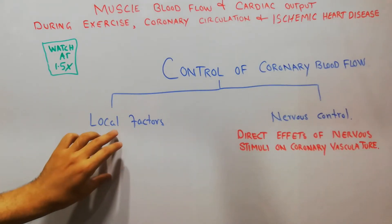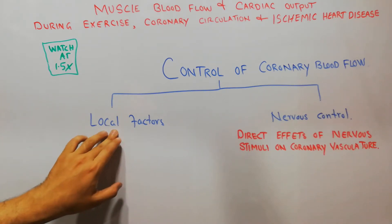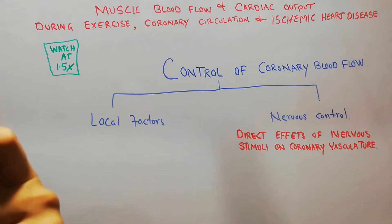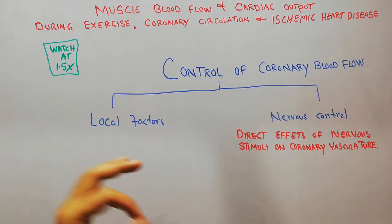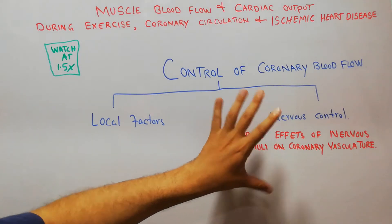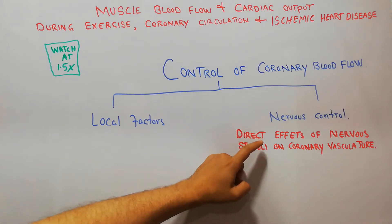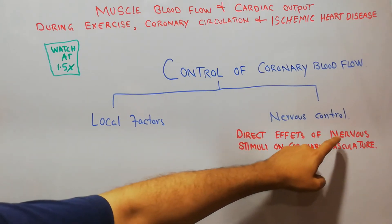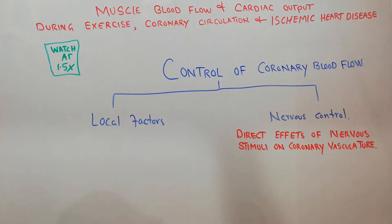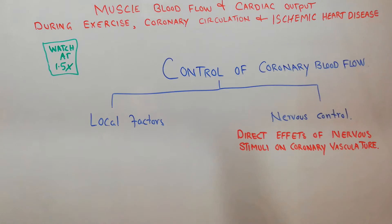We discussed in detail that there are two main mechanisms: the local factors and the nervous factors or nervous control, which basically control the amount of coronary blood that will be going to the cardiac muscles. In the local factors, the most important are the decrease in oxygen, adenosine, potassium ion, hydrogen ion, and lactic acid. We also discussed nervous control and that sympathetic stimulation plays an important role in increasing or decreasing coronary blood flow. Today we focus on the direct effects of nervous stimulation on coronary vasculature, because in the last lecture we also discussed some indirect effects.